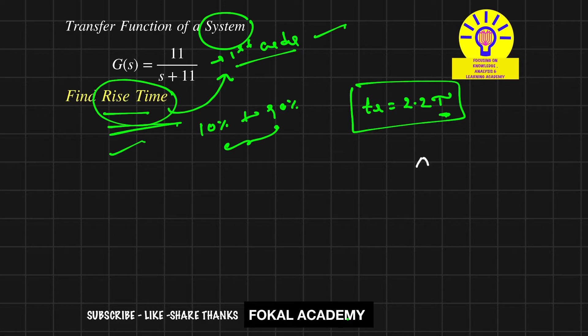First of all, we know that A / (1 + sτ) is the standard transformation for a first order system. Now bring this into the standard format. Then it becomes 11 / [11(1 + s/11)].